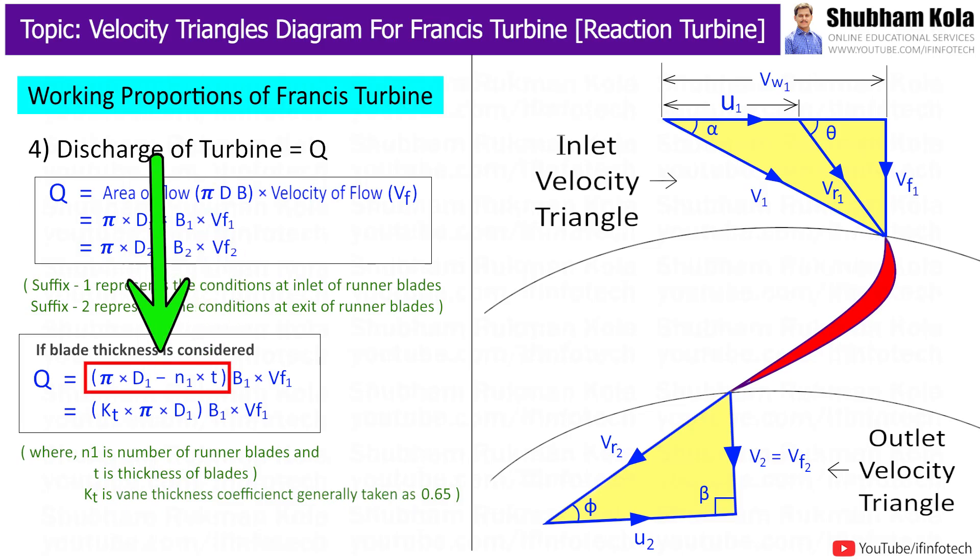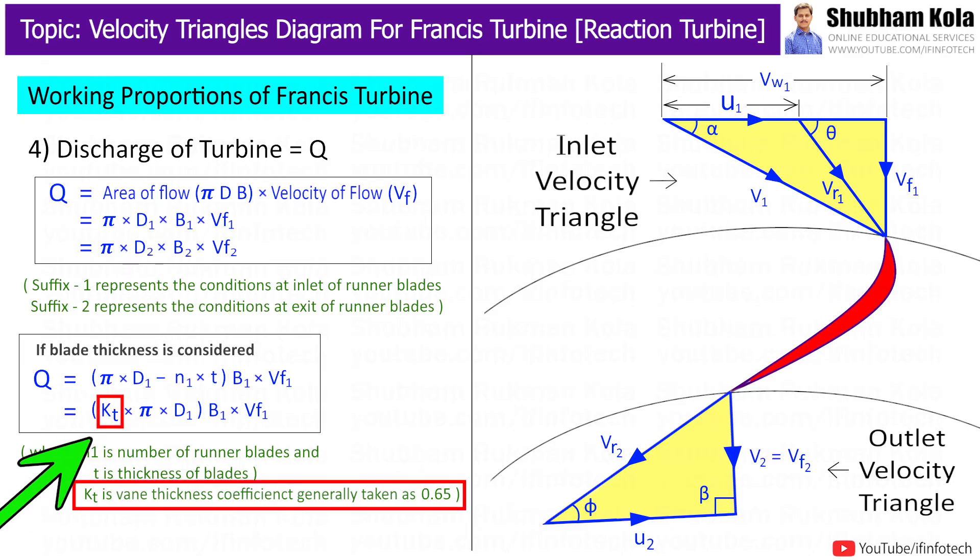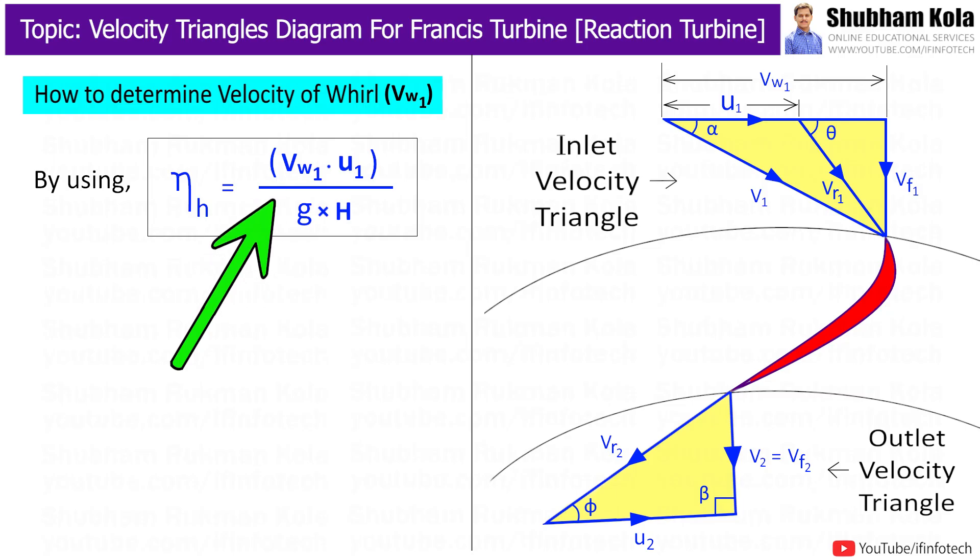Now, here instead of pi d1 minus n1 t, we write down kt pi d1. And here kt is known as vane coefficient and it is generally taken as 0.65.